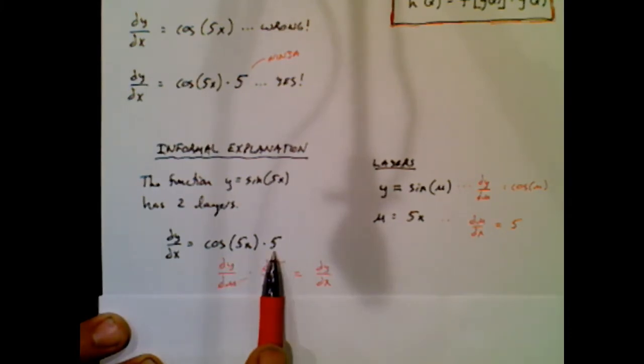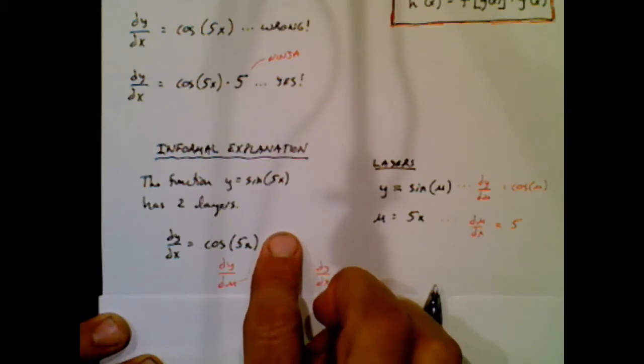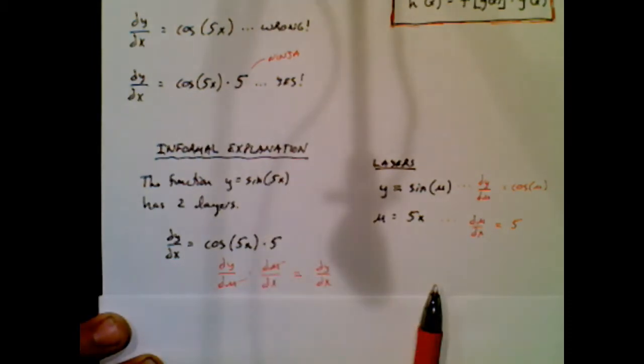I call it the ninja, because that five is so sneaky, you miss it, you think you're right, and then the five kills you and you didn't even know it.